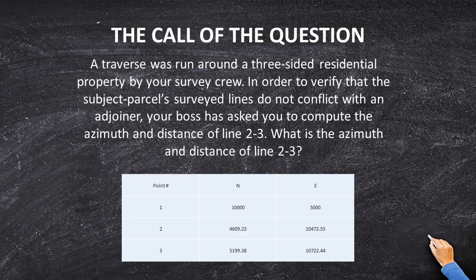A traverse was run around a three-sided residential property by your survey crew. In order to verify that the subject parcel's surveyed lines do not conflict with an adjoinder, which is a neighboring property, your boss has asked you to compute the azimuth and distance of line 2-3. What is the azimuth and distance of line 2-3?